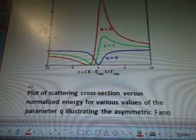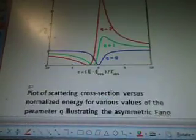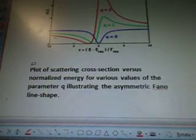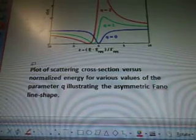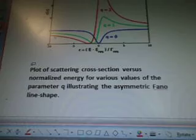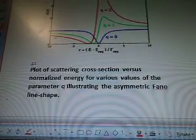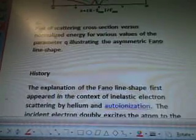So there's the red, green, and blue lines of spectra. Plot of scattering cross-section versus normalized energy for various values of the parameter Q, illustrating the asymmetric Fano line shape. Notice the red one, Q equals 2. You know what I'm going to say that looks like.